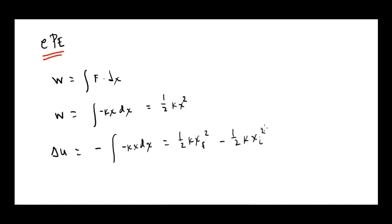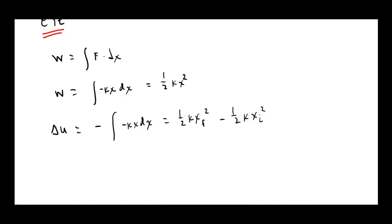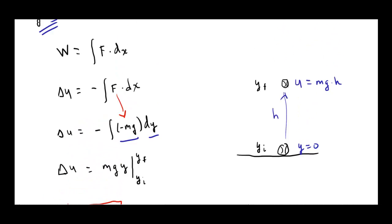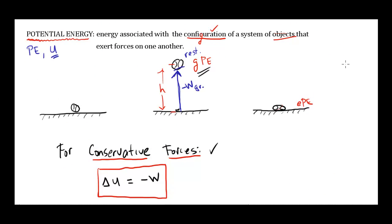Again, it's your choice what your reference point is — what you call x equals zero is your choice. In many cases this reduces to U equals one-half kx squared, provided we call x-initial zero. Here's another equation we're going to use quite a bit — this is elastic potential energy. That's a quick introduction to potential energy. Some technical stuff in there, but as we use it, hopefully it'll make more sense.